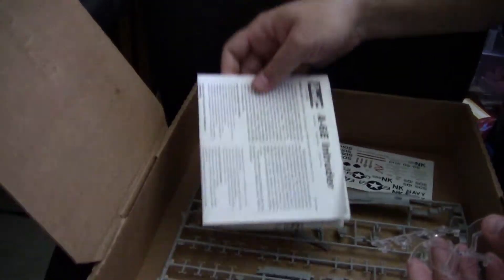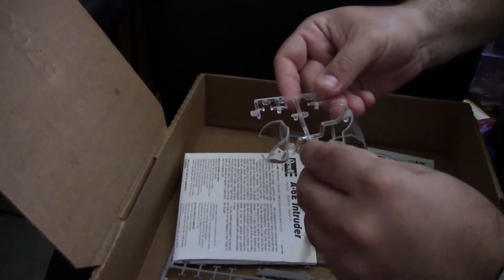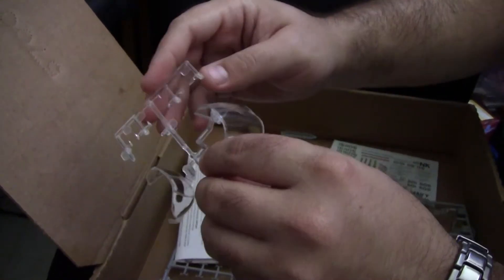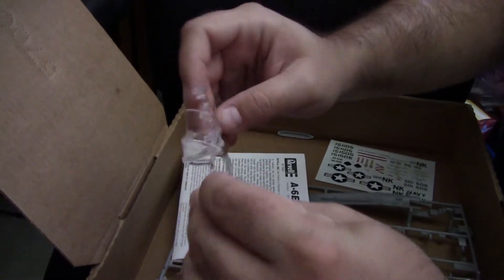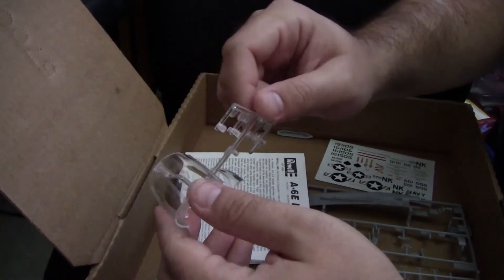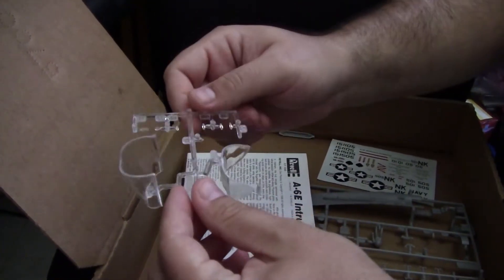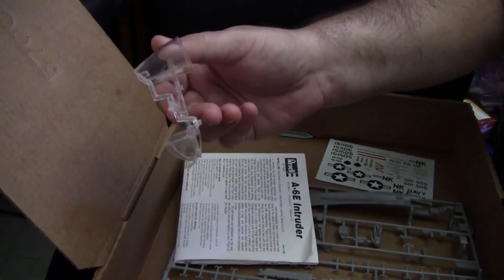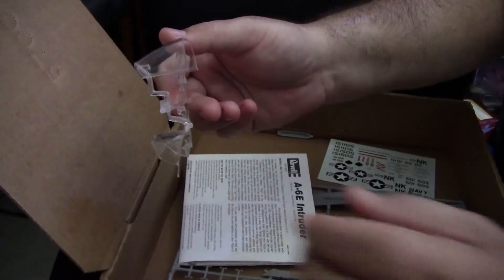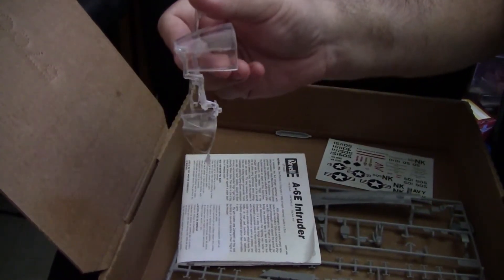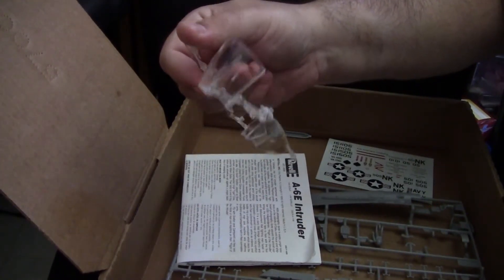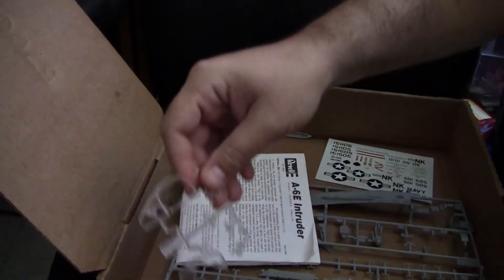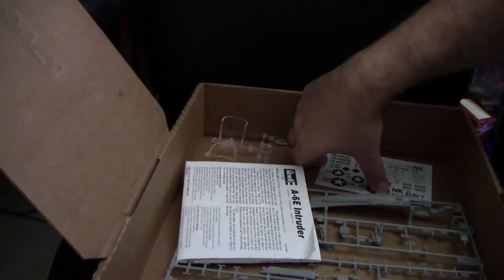Last up as far as sprues go, we have our clear parts. This is where they actually did do a decent job as I see no real deformities in the casting of canopies, with the exception of this little bit of flash here. The front windscreen is nicely done. So overall, the clear parts are a nice saving grace with this kit.